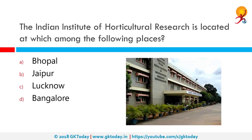The Indian Institute of Horticultural Research is located at which among the following places? The Indian Institute of Horticultural Research is an autonomous organization acting as a nodal agency for basic, strategic, anticipatory and applied research on various aspects of horticulture such as fruits, vegetables, ornamental, medicinal and aromatic plants and mushrooms in India. It is located in Bangalore or Bengaluru, Karnataka.